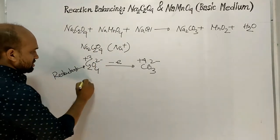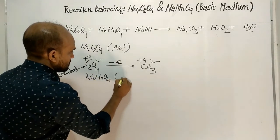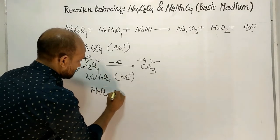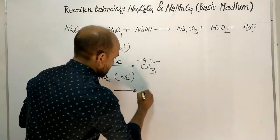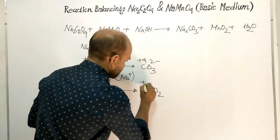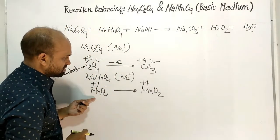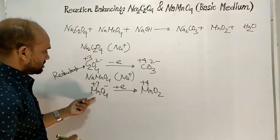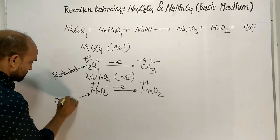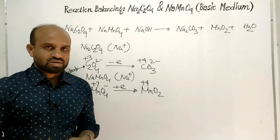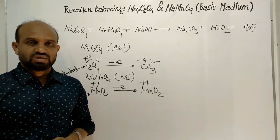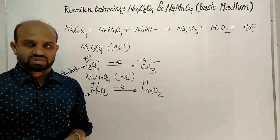Now let's look at sodium permanganate. Here, sodium ion is a spectator ion. The permanganate ion is converted to manganese dioxide. The oxidation number of manganese goes from plus 7 in permanganate to plus 4 in manganese dioxide, so permanganate accepts electrons and is therefore the oxidant. So oxalate ion is the reductant (electron donor) and permanganate ion is the oxidant (electron acceptor).